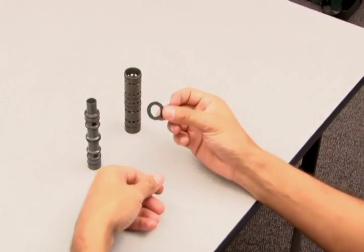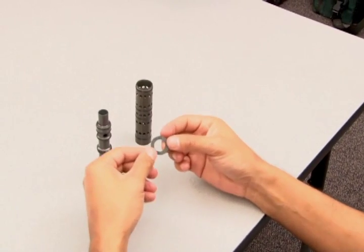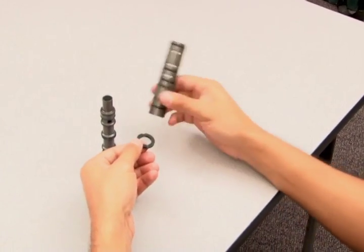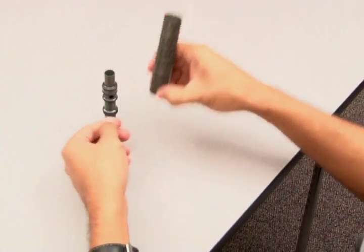To reassemble the air cycling valve assembly, take the bumper that fits on the end of the sleeve. This bumper has a rubber side and a stainless steel side. Place the rubber side facing up into the sleeve.